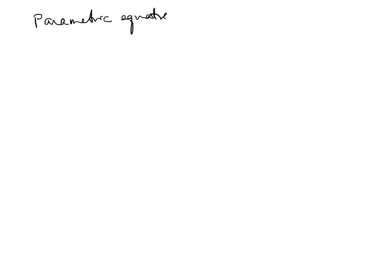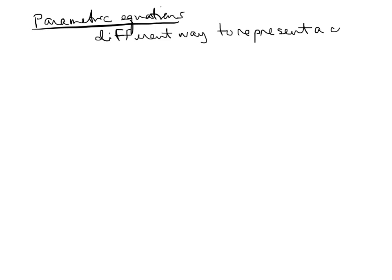In this video I'm going to talk about parametric equations. Parametric equations are just a different way to represent a curve. They always have some x equals and a y equals, and sometimes a z equals if that curve is three-dimensional. And it's always in terms of one parameter.